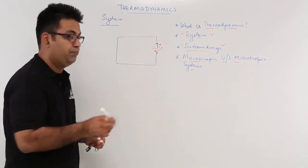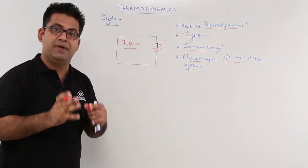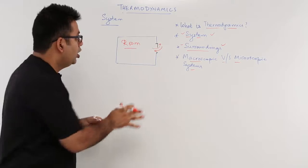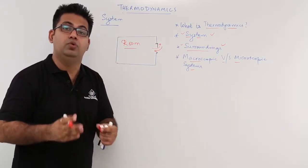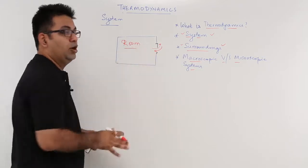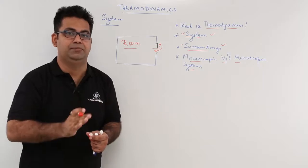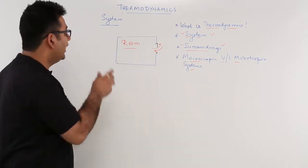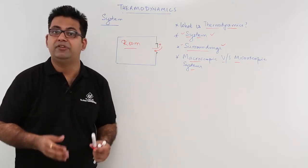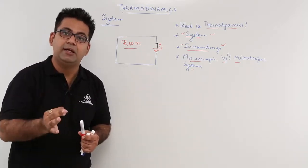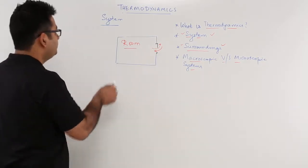You have some energy interaction, some mass inflow, some heat inflow, some mass outflow, some heat outflow occurring from this room. So the energy interaction is basically concentrated on this room. Whatever thermodynamic study we are going to do is going to happen with respect to this room. So this room is our system.